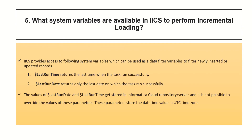The fifth question is what system variables are available in IACS to perform incremental loading. Normally in Power Center, you need to calculate the last successful run time manually. In IACS, it provides two system variables: last run time and last run date. Last run time returns the last time when the task ran successfully, and last run date returns only the last date on which the task ran successfully. These values are stored in the Informatica Cloud repository and it is not possible to override them. These parameters only store the date-time value in UTC time zone.